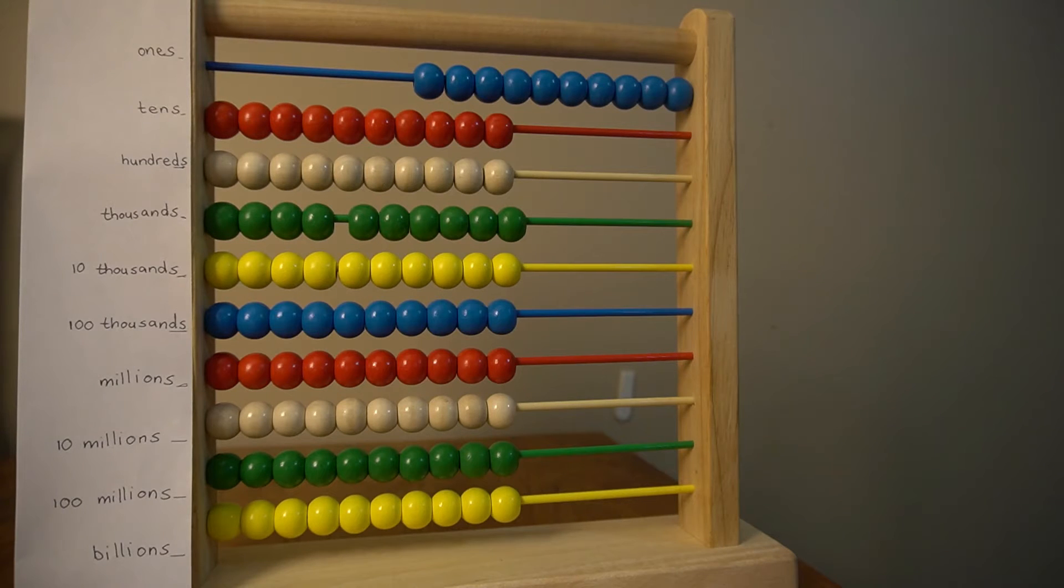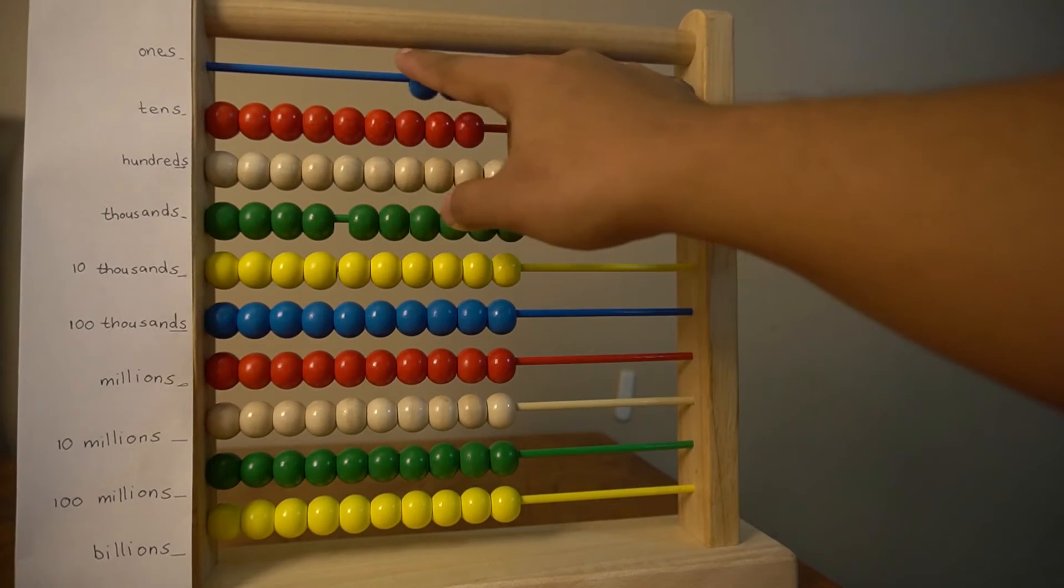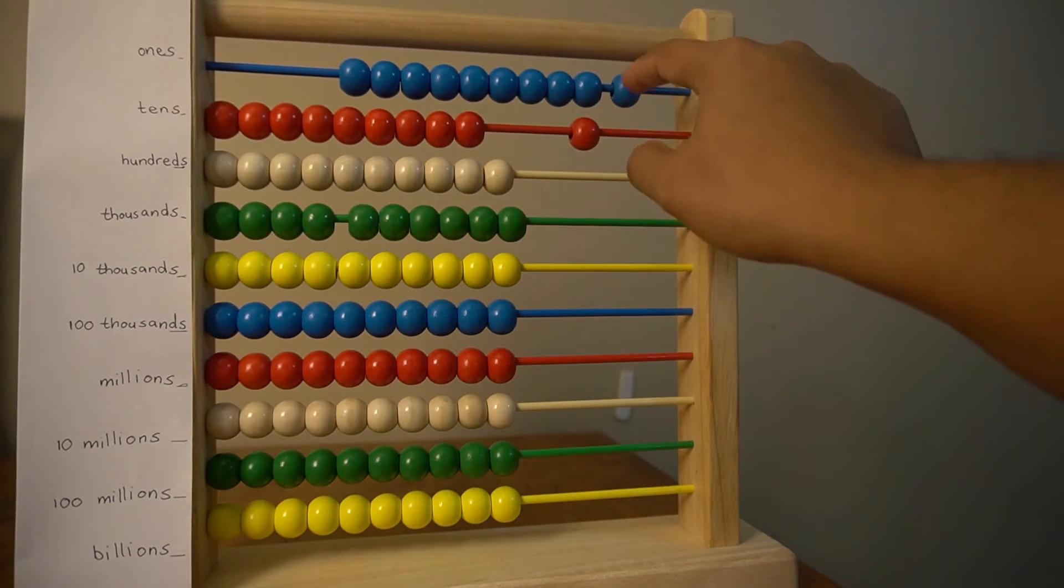Now with a base of ten, it means that I go on to the next place value of the tens. So this red bead in the tens row is worth ten of these blue beads in the ones row.